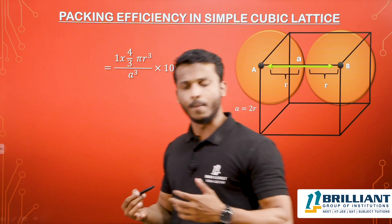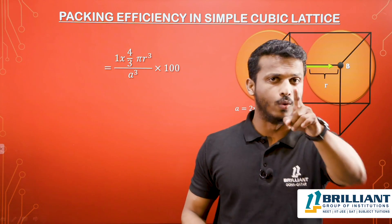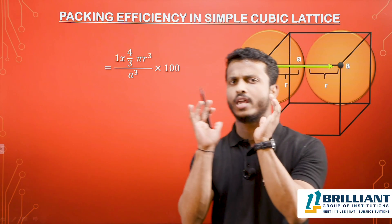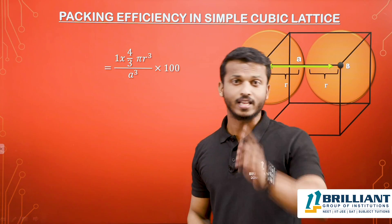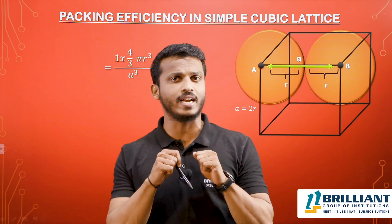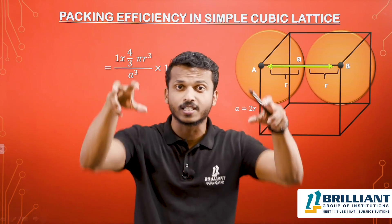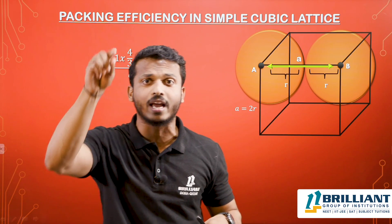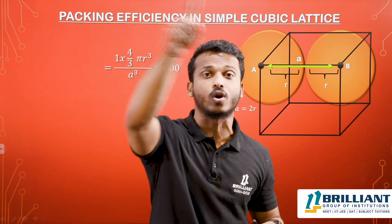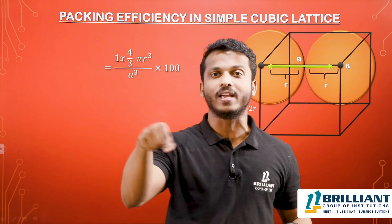Now let's derive the packing efficiency expression. Packing efficiency equals the volume occupied by the spheres in the unit cell divided by the total volume of the unit cell. The volume of one sphere is 4/3 πr³. In a simple cubic unit cell, there are eight corner spheres, and each corner contributes one-eighth of a sphere. So eight corners × (1/8) = 1 sphere total.